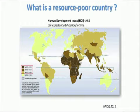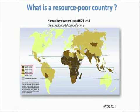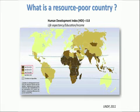First of all, what is a resource-poor country? There are a lot of definitions, but according to the World Bank and UNDP, a poor country may be defined by an index called the Human Development Index, HDI, that takes into account life expectancy, education, and income. Under 0.8, the country is considered a less developed country, and under 0.5, the country is considered a resource-poor country.